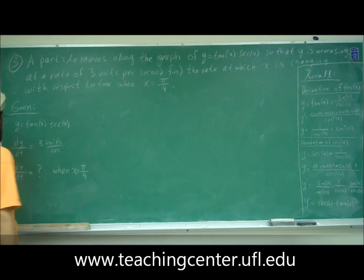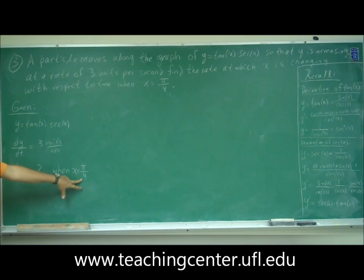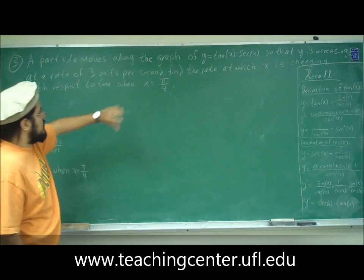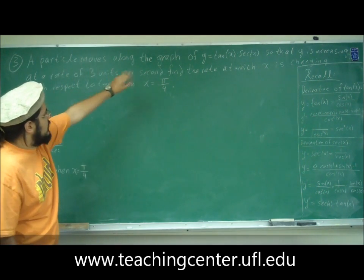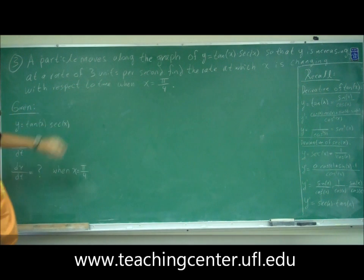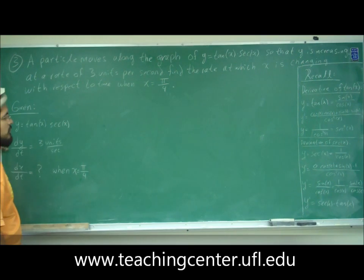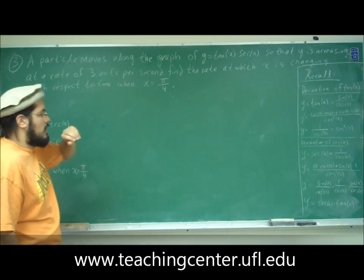Alright, so we're given the equation, we're given dy/dt, and we want to find dx/dt when x is equal to pi over 4. Always write down what's given on your related rates problem — that's the important information.